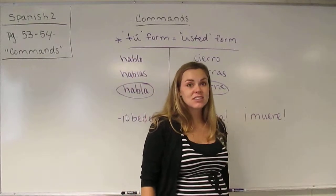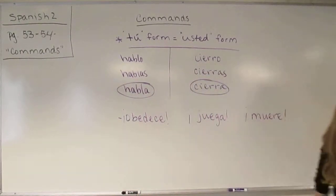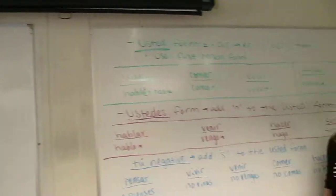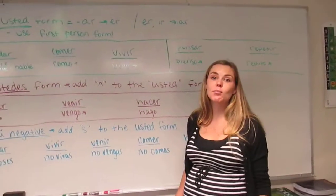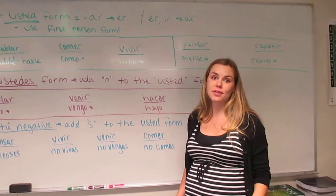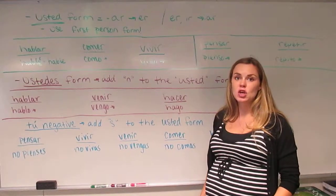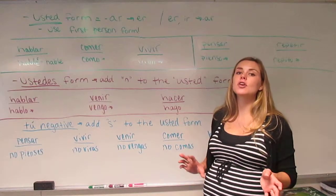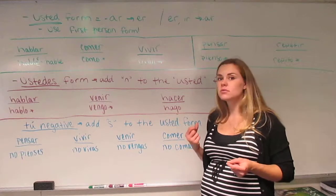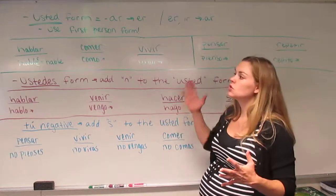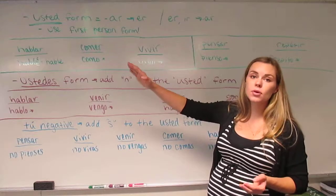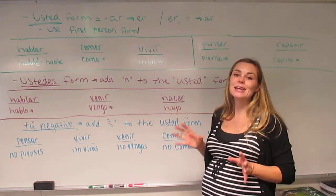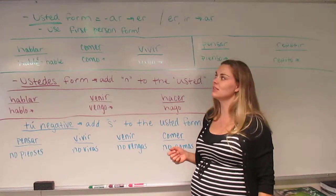Let's look at the usted, ustedes, and tú negative forms on the other whiteboard. Just when you thought things couldn't get more complicated, they do, and they will get very complicated. So please make sure, student, that you go through this video slowly, go back, look over your notes. Each item needs to be memorized completely. So remember the tú form on the other whiteboard. Now we're going to look at the usted form.